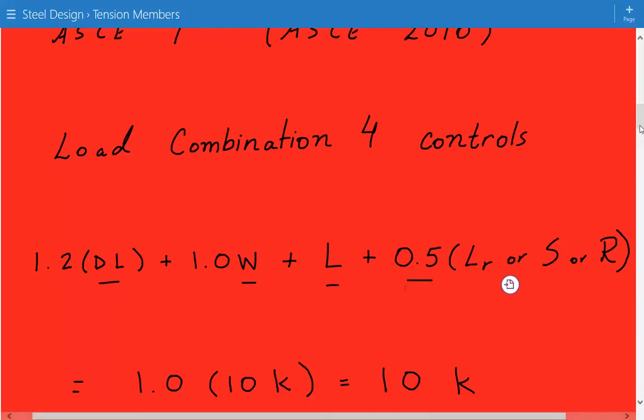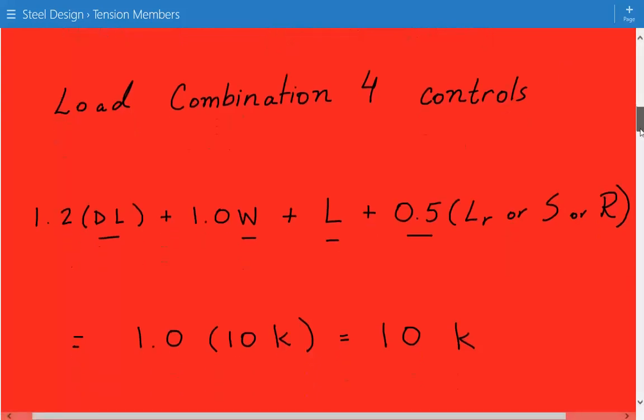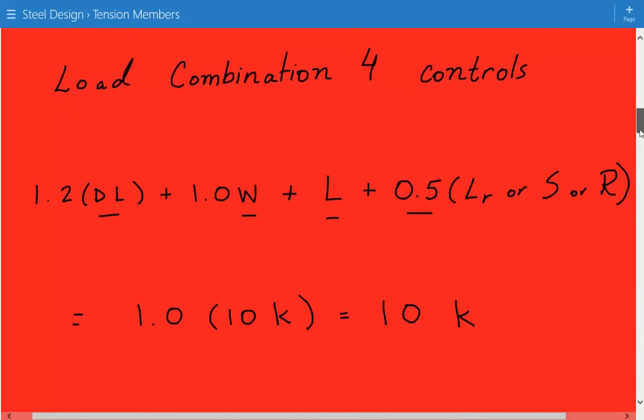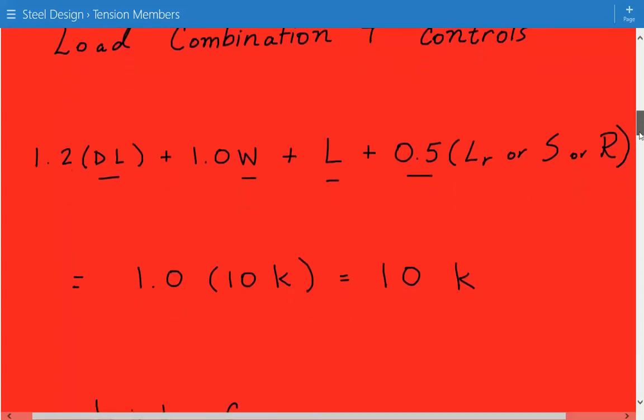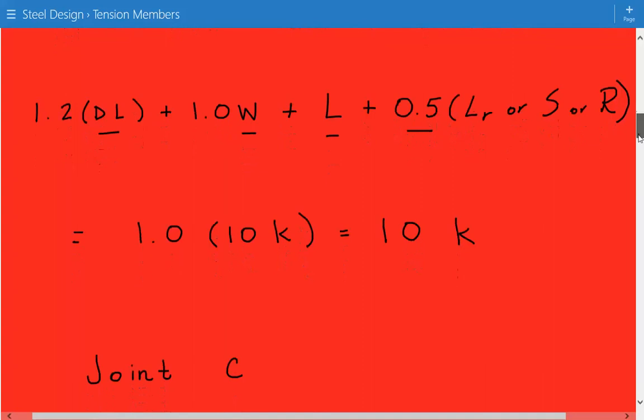And so the factored load is going to be, since everything else is zero, we're just left with 1.0 times wind, which is 1.0 times 10 kips, which is 10 kips.